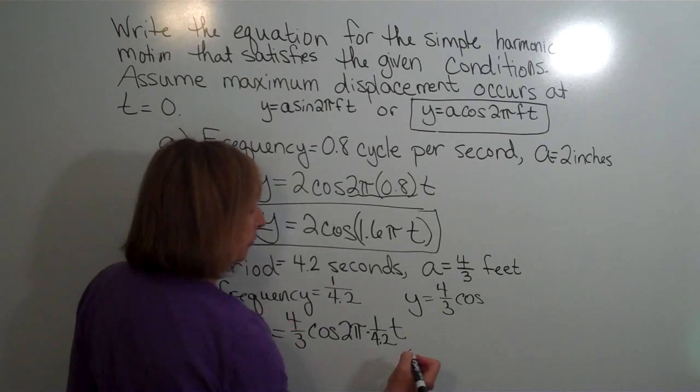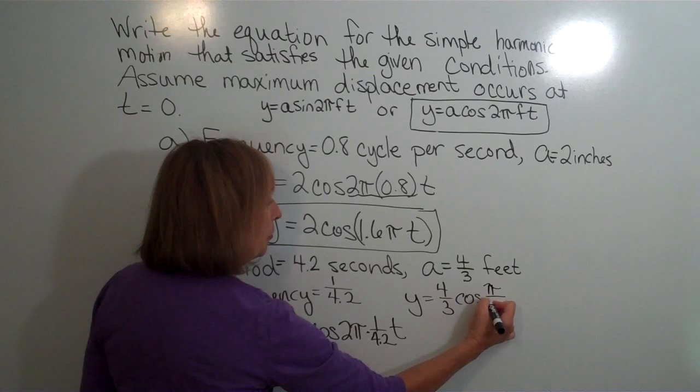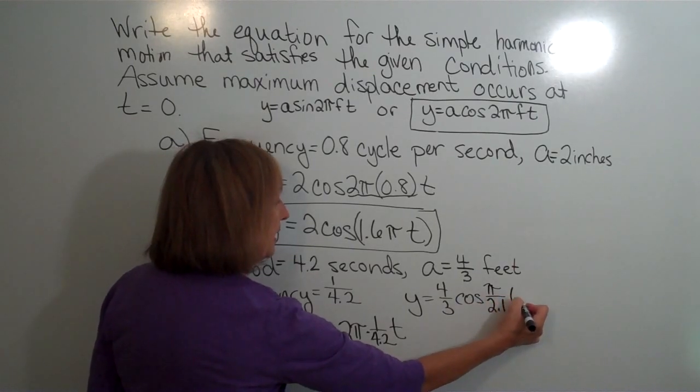So a common factor of 2 we'll remove. And now we'll have π over 2.1 t.